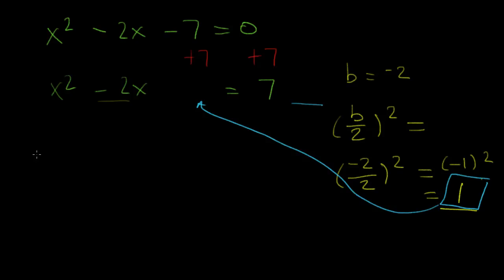I'm just going to go ahead and rewrite. x² - 2x, so I add the 1 to both sides. Plus 1 equals 7 plus 1. Now, obviously, 7 plus 1 is 8, so I'll get that out of the way.